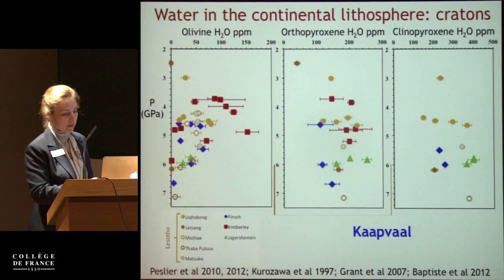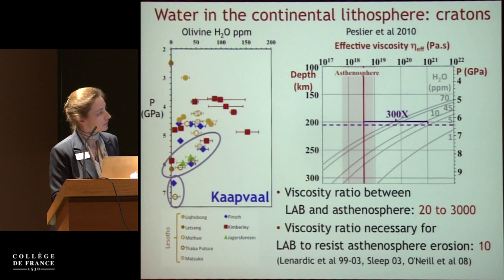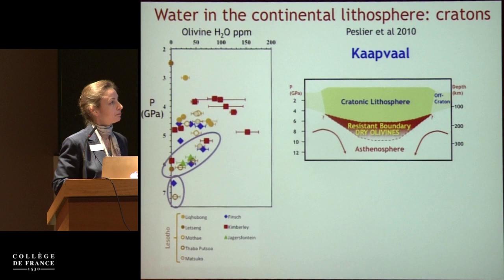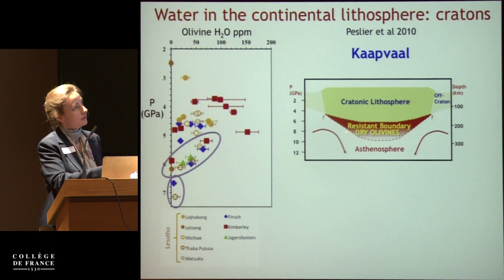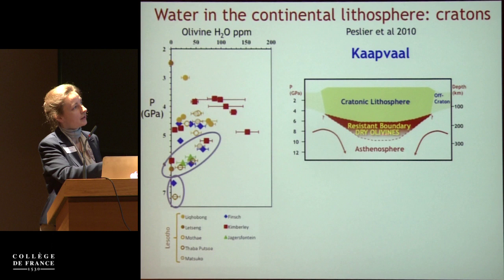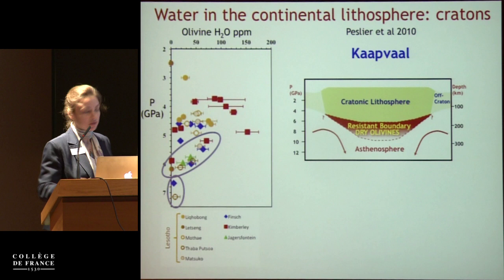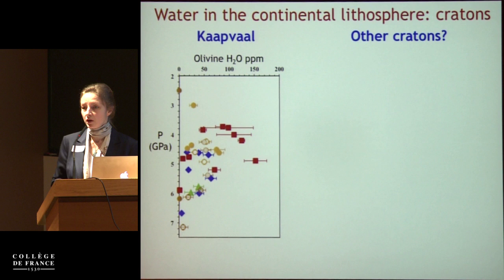Based on this observation, in 2010 we proposed a hypothesis: maybe at the bottom of the Kaapvaal cratonic lithosphere the olivines are very dry, which makes them very strong and undeformable. This strong dry layer at the base helps cratons resist delamination by the asthenosphere from below, in addition to the effects of density and temperature.